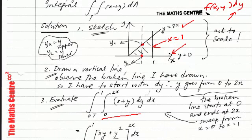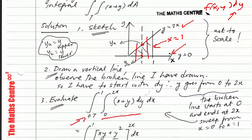This vertical line could have been drawn anywhere in the region. The smallest value of x would be 0, and the largest value of x will be 1. You can sweep this vertical line from x equals 0 to x equals 1 — that's how we determine the limits for x. So the x limits go from 0 to 1.